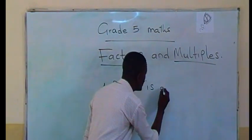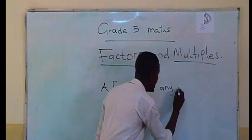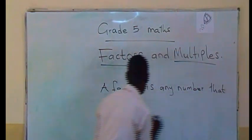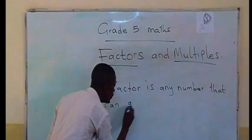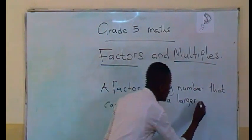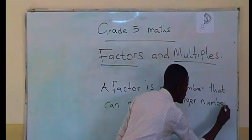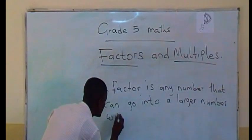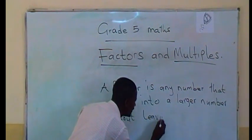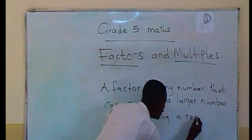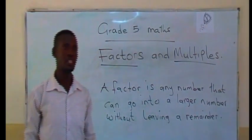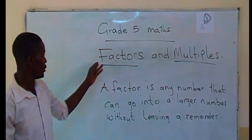A factor is any number that can go into a larger number without leaving a remainder. This is the simple definition we can give to what a factor is.